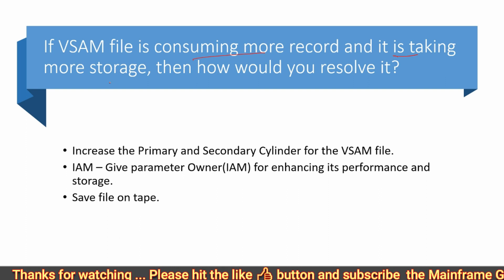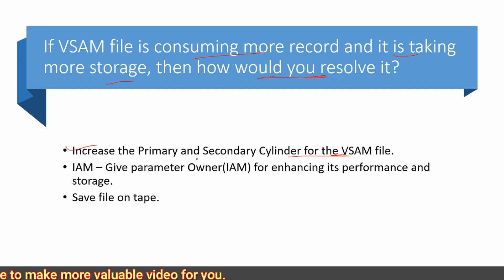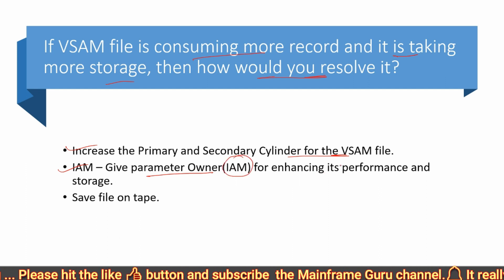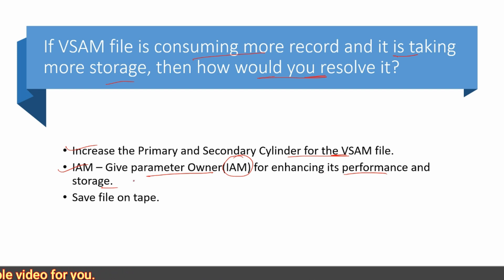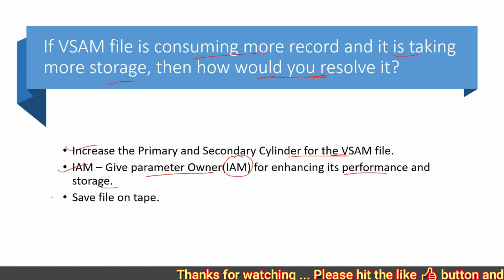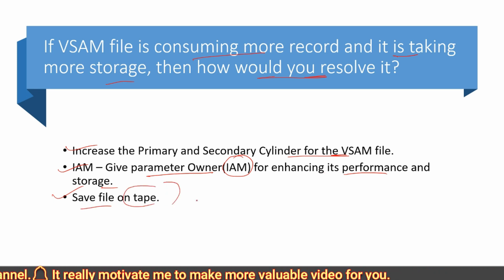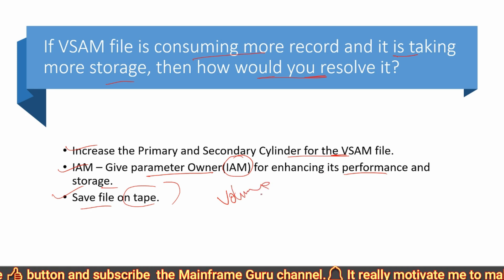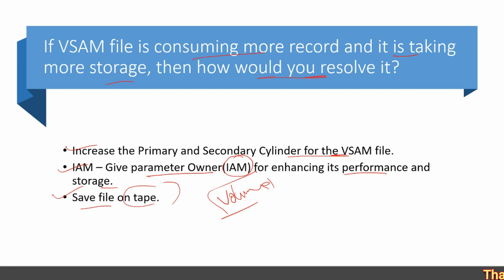If a VSAM file is consuming more code and taking more storage, how would you resolve it? Increase the primary and secondary space allocation for the VSAM file and use the KEY parameter for enhancing performance. In some projects, you can also save the file on tape to reduce storage. The VOLUME parameter also plays a role — specifying at which volume and how much space is available.